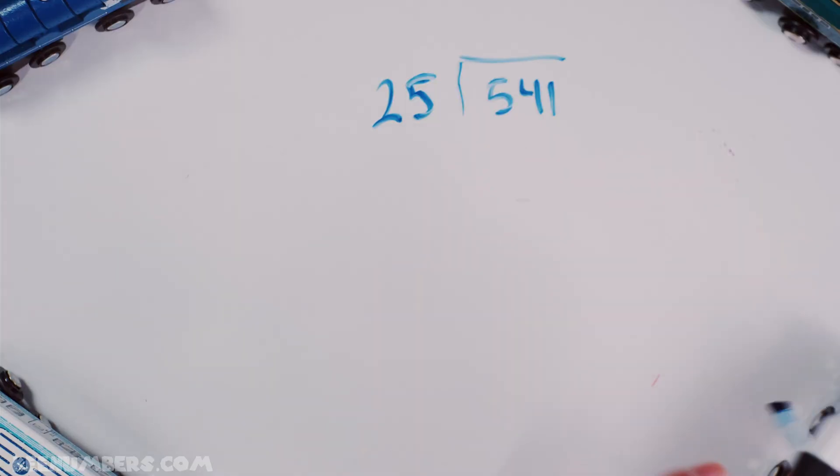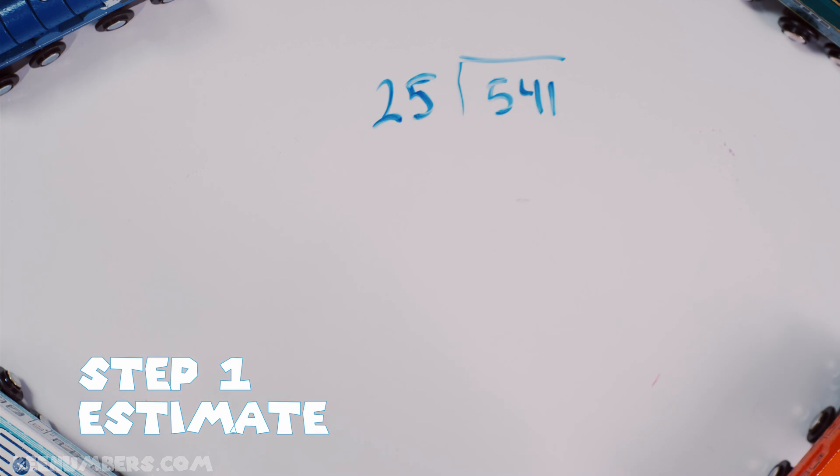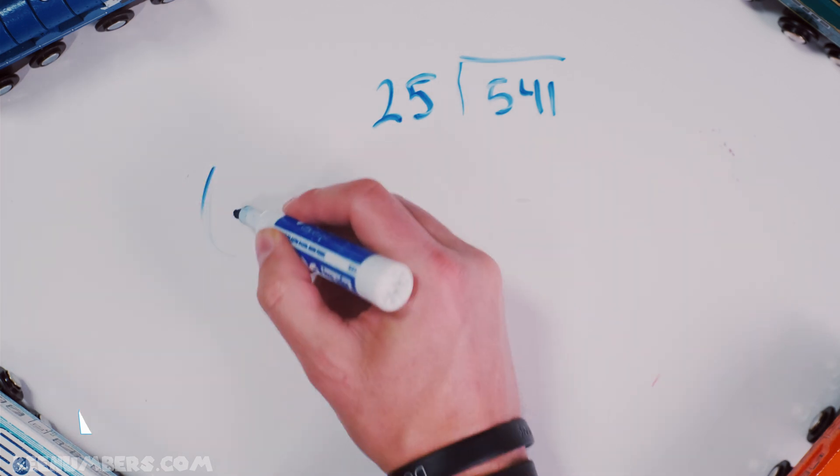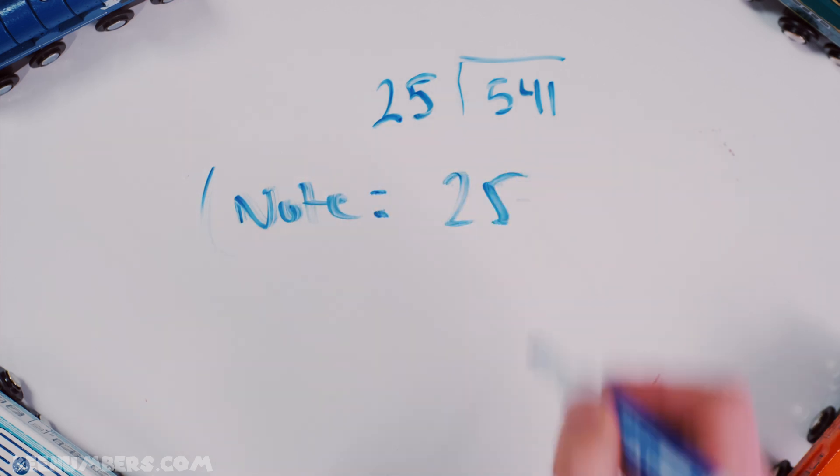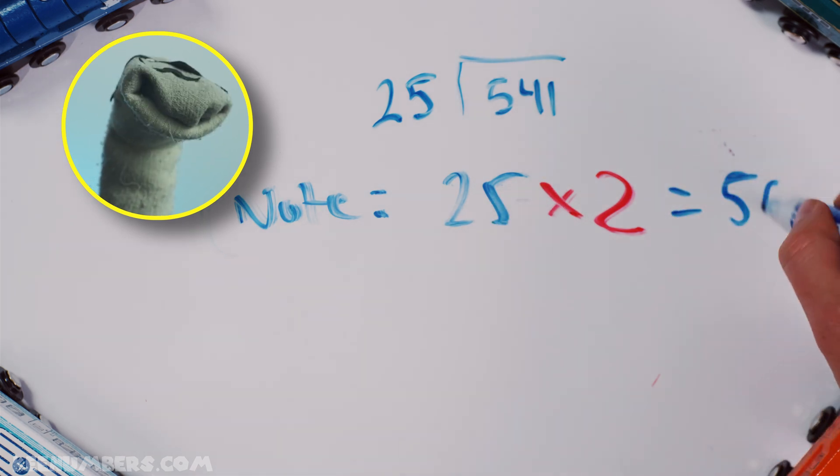How many times is 25 going to 541? Step 1, you're gonna estimate. How many times is 25 going to 50? That's what we're gonna note. 25 times 2 is equal to 50.